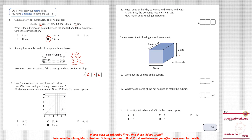Line M is shown on a coordinate grid and goes through points A and B. At what coordinates do lines L and M meet? The best way is to join them and find the intersection. Both lines meet at five, and this line is also at five, so the answer is C: (5, 5).